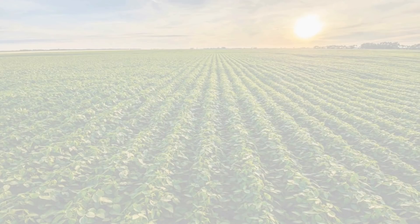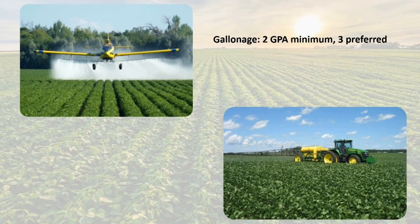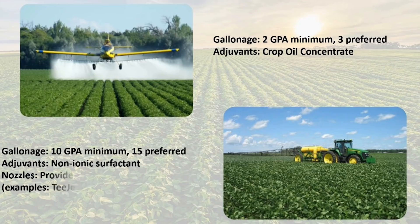One big advantage for applying fungicides to soybeans is that, for the most part, you can apply either by air or using a ground rig. Both methods are effective as long as everything is done right, and that means making sure we get adequate coverage. For aerial applications, we want to use a minimum of 2 gallons per acre, but 3 would be preferable. Also, since these droplets are very small, include some crop oil to prevent droplet evaporation. As for ground applications, use a minimum of 10 gallons per acre, but I'd rather see that bumped up to 15. Include a surfactant adjuvant for increased coverage and retention on the leaf, and utilize nozzles that will provide medium to coarse droplets.